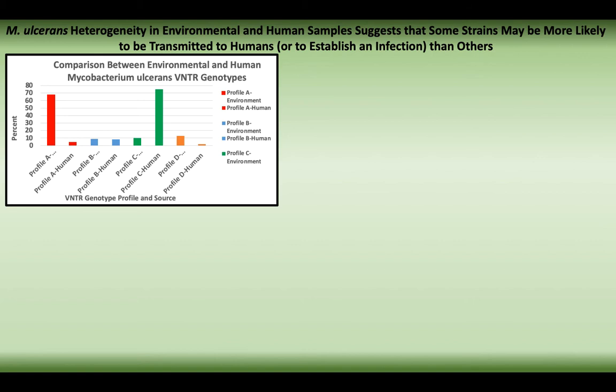Variable number of tandem repeat profiling is a method that takes advantage of the fact that there are different loci within a genome that contain tandem repeats. One can create profiles by targeting multiple loci with these repeats, determining the number of copies of the repeat sequence, which can then be used to discriminate between species and strains. This method has been proven useful in strain discrimination of many different mycobacteria, including M. ulcerans.